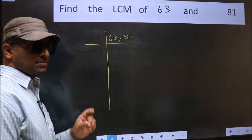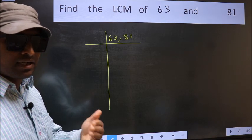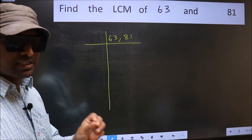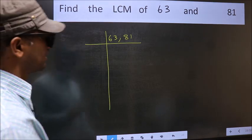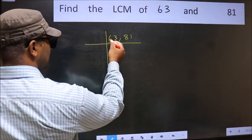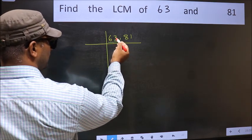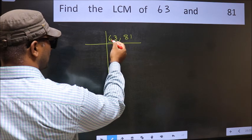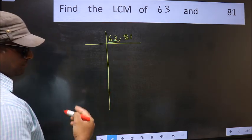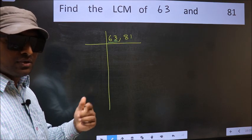This is step one. Now you should focus on the first number which is 63. In this number, the last digit 3 is not even, so this is not divisible by 2. Next prime number is 3.